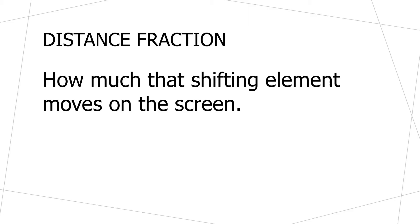The second metric that goes into the CLS score is the distance fraction. The distance fraction measures how much a shifting element actually moves. If something only moves one or two pixels, that's not such a big deal. But if something moves 50 or 100 pixels, that causes many other elements to move quite a bit on the screen as well, presenting a bigger problem.